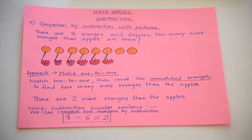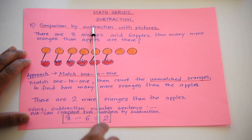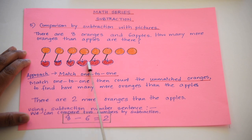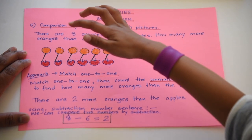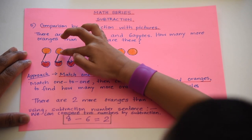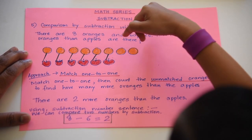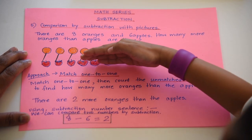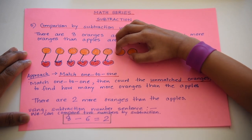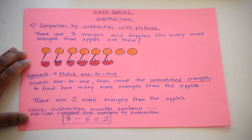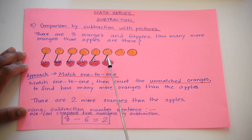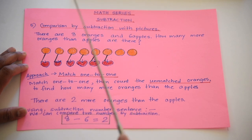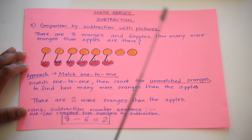Let's do an example comparing two sets of objects. There are eight oranges and six apples. How many more oranges are there? Two. First, match one to one — one through six matched — and there are two unmatched oranges. That means there are two more oranges than apples. The subtraction number sentence is eight minus six equals two. This is how we compare two sets of objects: match one to one, and the unmatched objects tell you how many more.